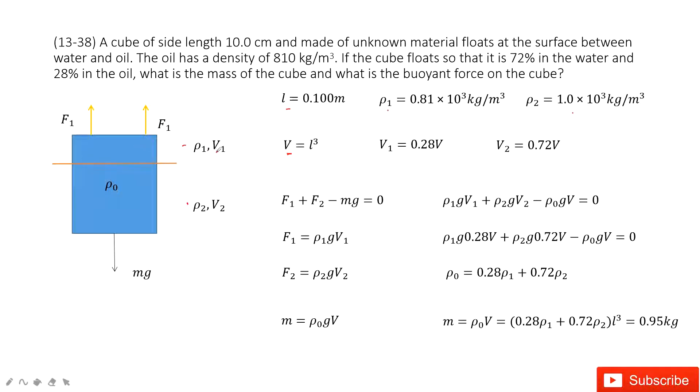We find the first part V₁ is 0.28V and V₂ is 0.72V.